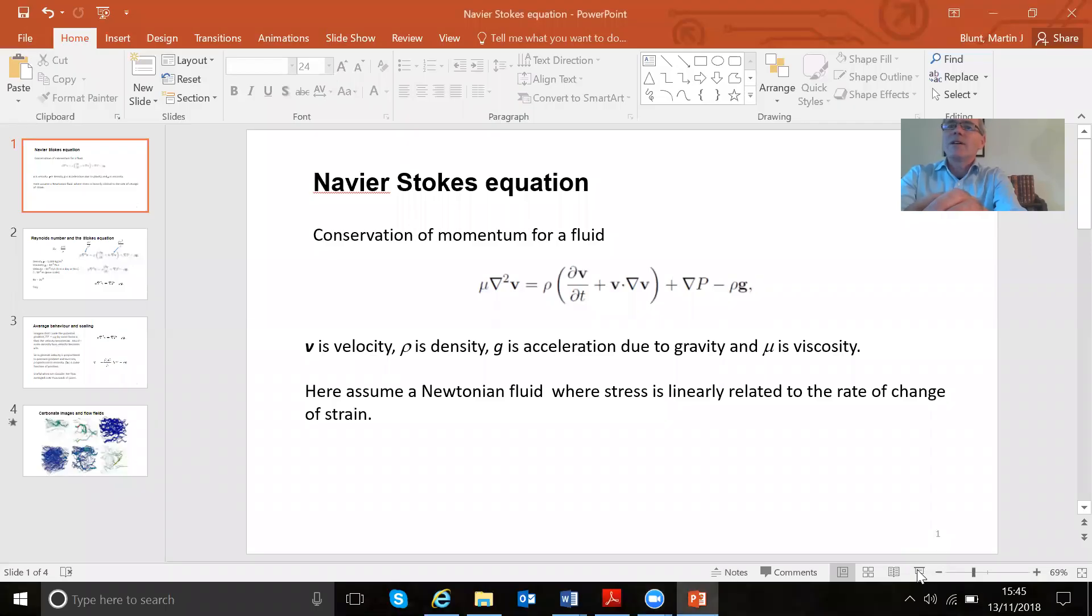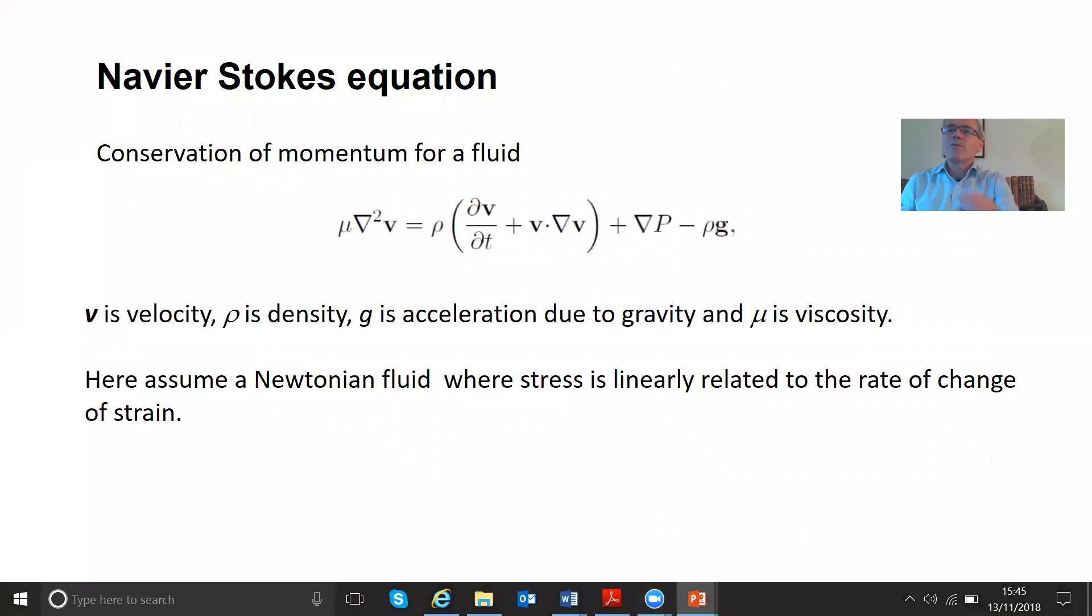So without further ado, let's introduce the equation. It's shown here on the screen, the Navier-Stokes equation. Where does it come from? How is it derived originally? It's essentially conservation of momentum, or even simpler, Newton's second law of motion F equals ma, but applied to a fluid or a unit volume packet of fluid that's moving in a larger surrounding body of fluid.